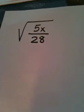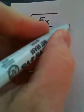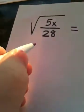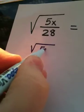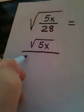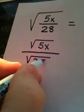Alright, so here's what we're going to do. We are going to first use the quotient rule and split this apart. We have the square root of 5x in the numerator, and we have the square root of 28 in the denominator.